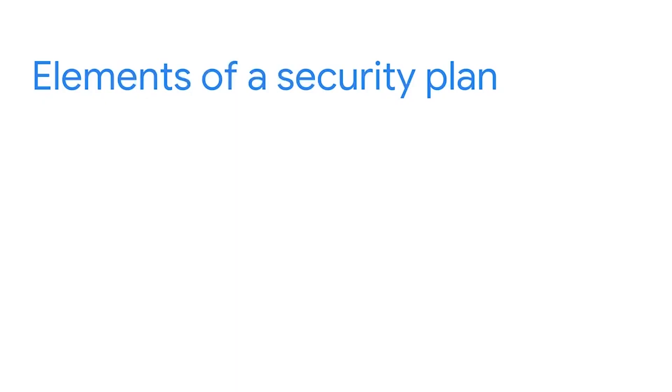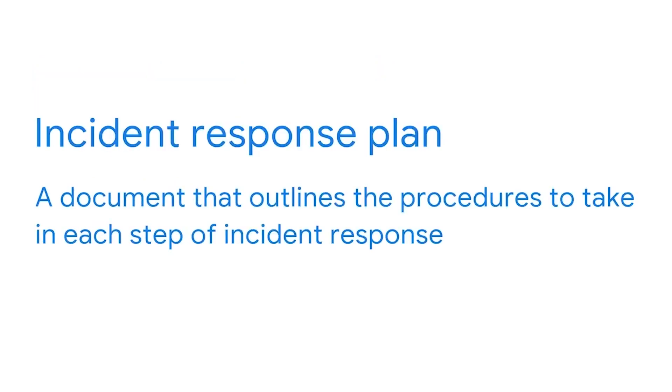You may remember learning that security plans consist of three basic elements: policies, standards, and procedures. An incident response plan is a document that outlines the procedures to take in each step of incident response. Response plans, just like response teams, are not all the same. Organizations tailor their plans to meet their unique requirements, such as their mission, size, culture, industry, and structure.